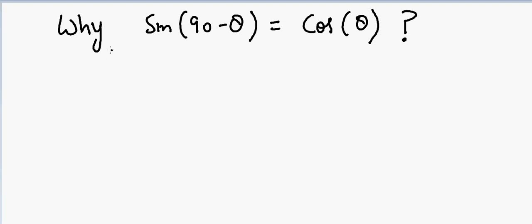Hi guys, so I was wondering why sine of 90 minus theta is equal to cos of theta. Let's try to figure it out. So suppose if I have a triangle and I'm looking at this theta right.